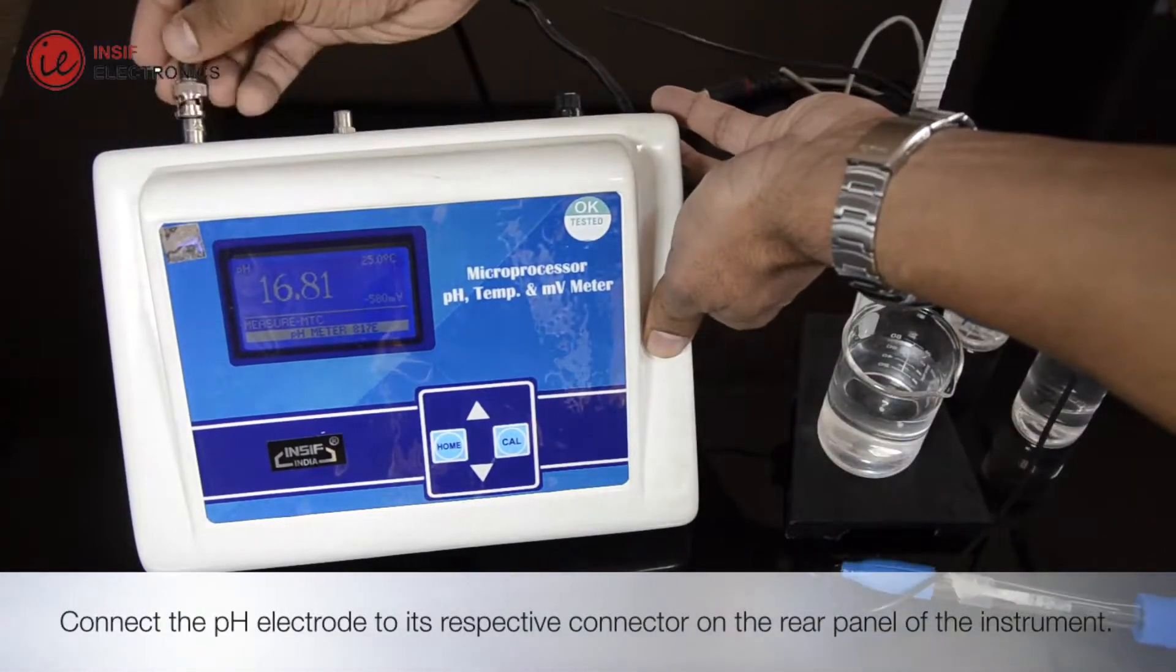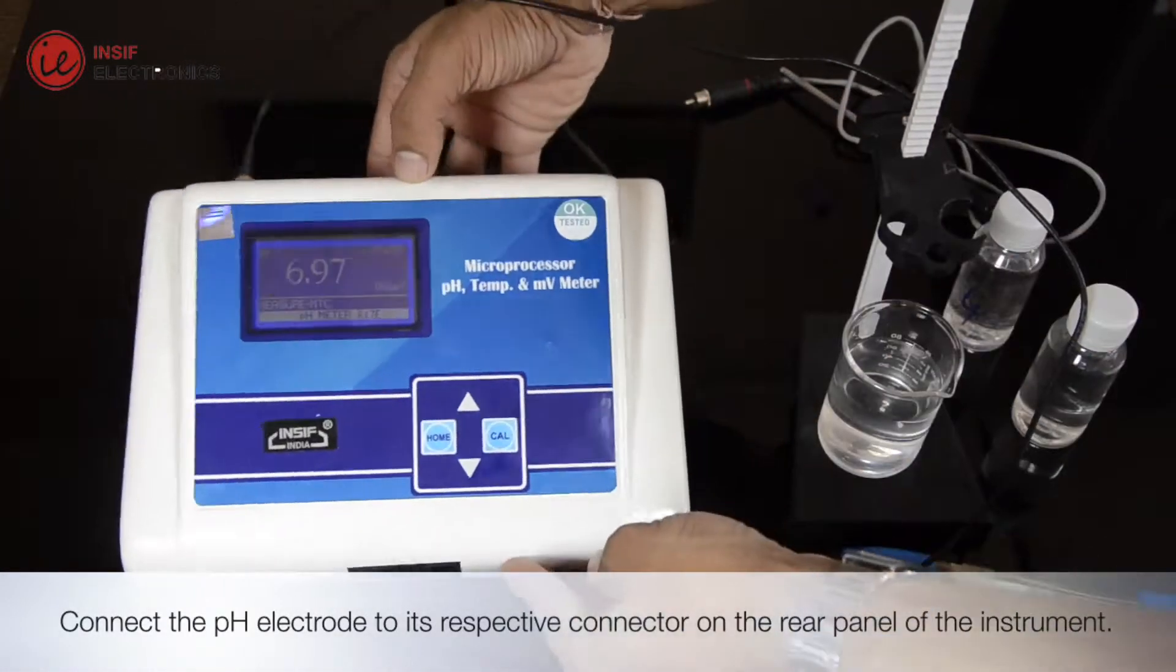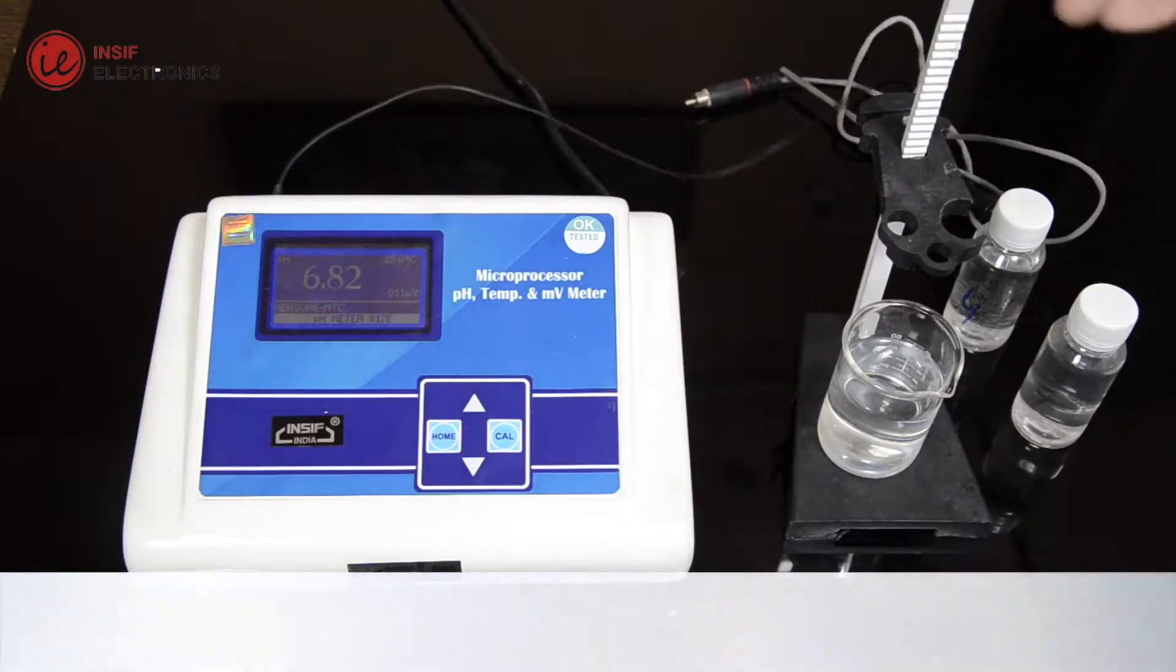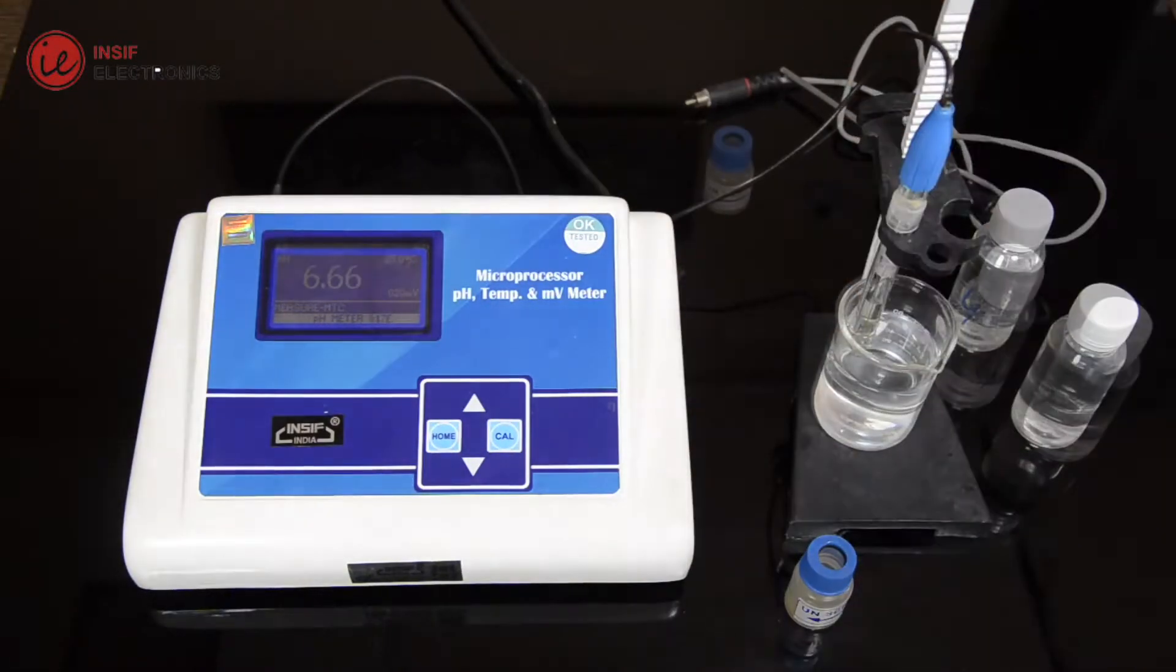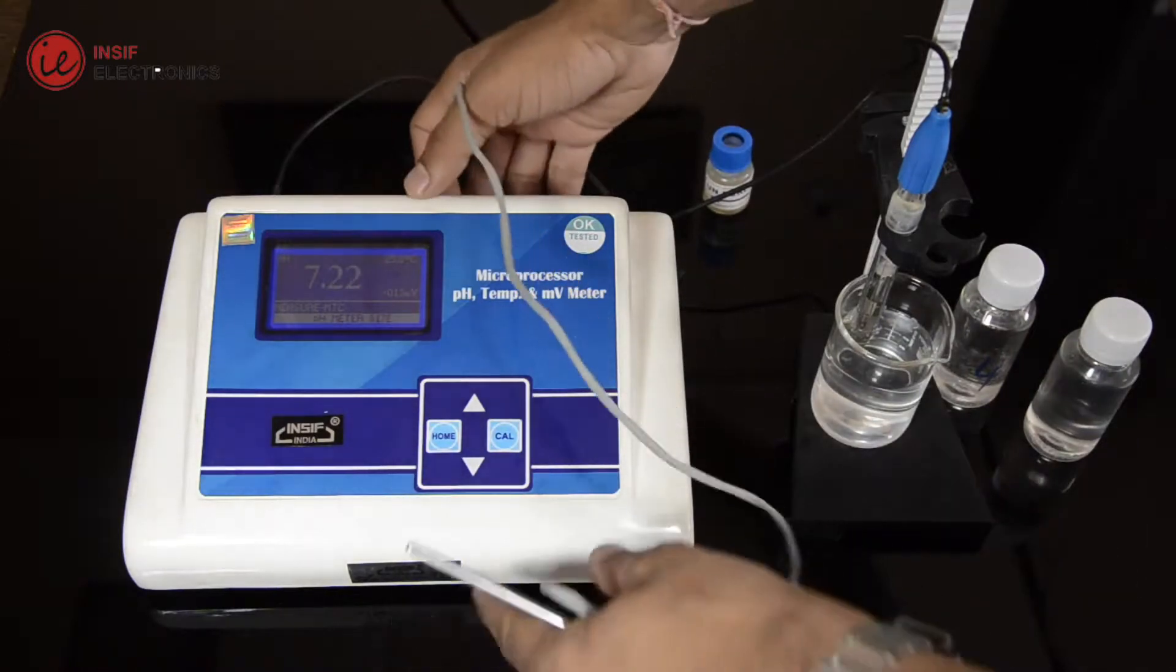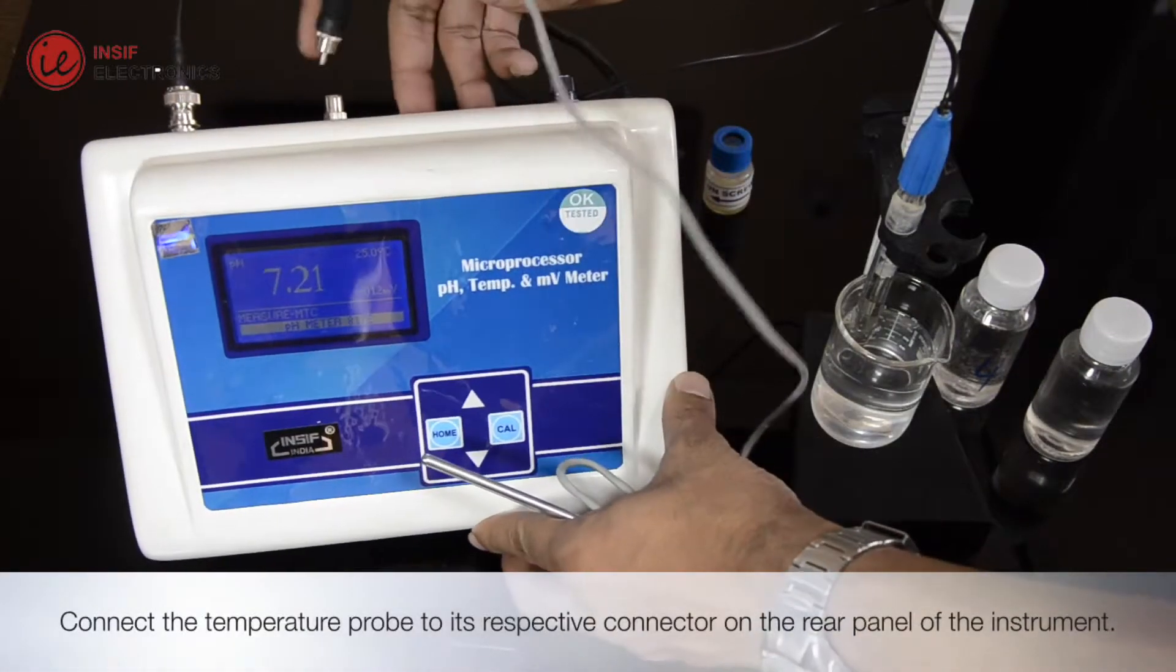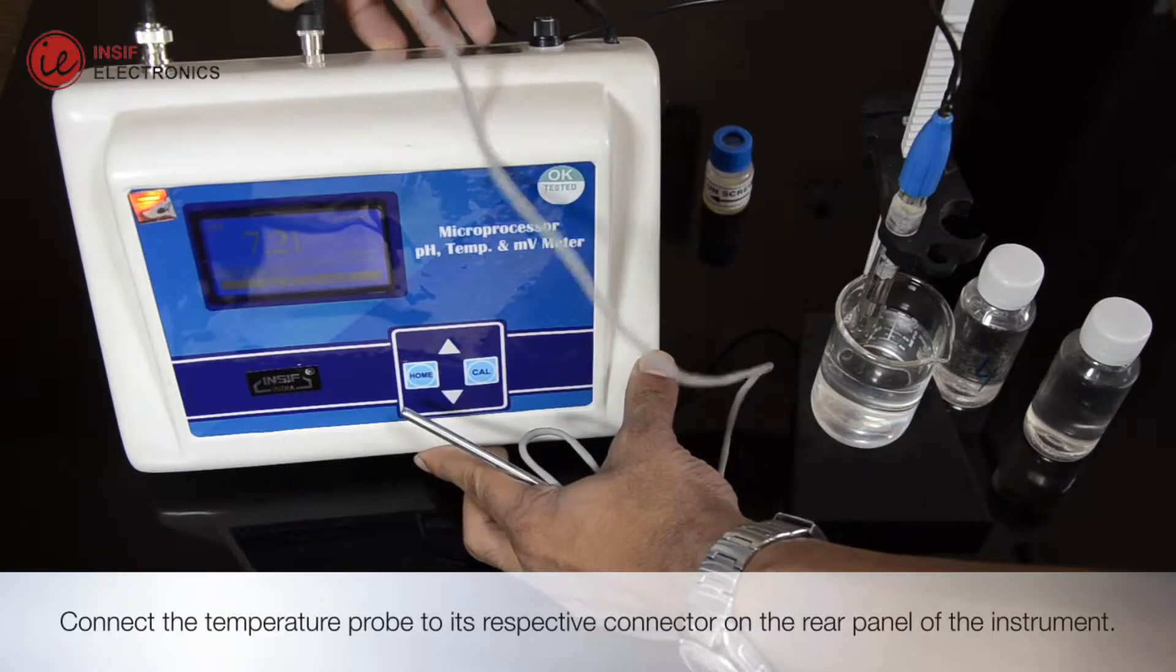Connect the pH electrode to its respective connector on the rear panel of the instrument. Connect the temperature probe to its respective connector on the rear panel of the instrument.